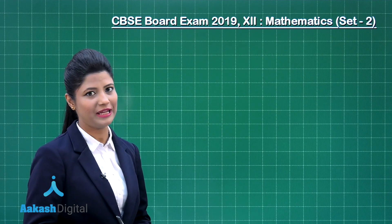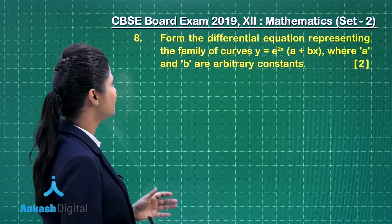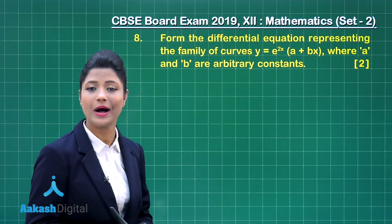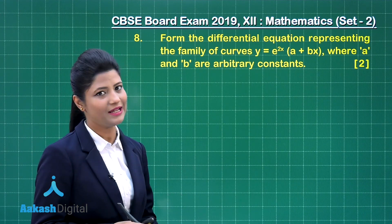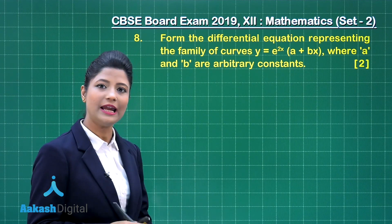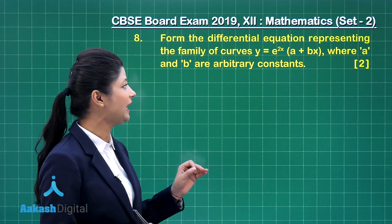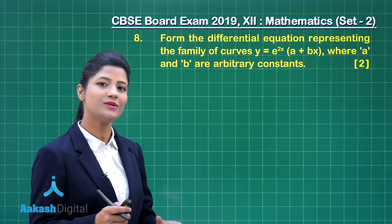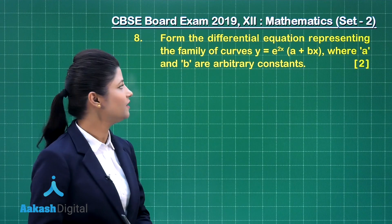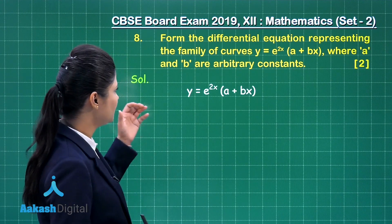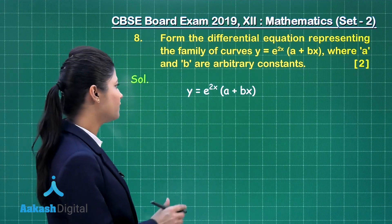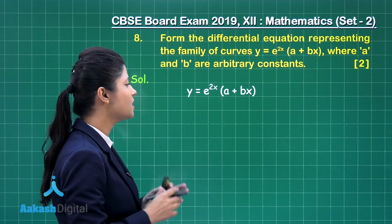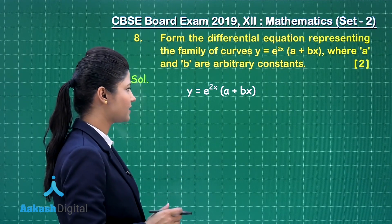Let us discuss question number 8. It states: form the differential equation representing the family of curves y = e raised to the power 2x, multiplied by (a + bx), where a and b are any two arbitrary constants. This question carries two marks. Here, for this family of curves, y = e^(2x) * (a + bx).